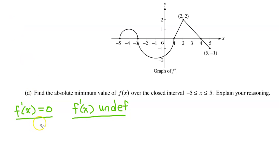The first step is to find the critical values where f prime is equal to 0 or where f prime is undefined. But looking at the graph of f prime, we see that it is continuous everywhere. So there is nowhere f prime is undefined.